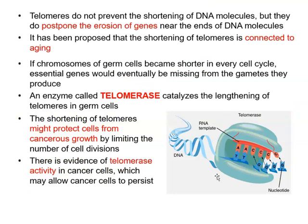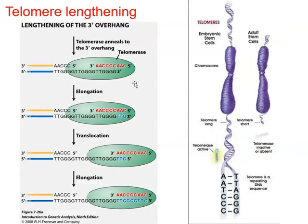Telomerase is the enzyme that can extend telomeres. Looking at this picture, telomerase comes equipped with an RNA template. The nucleotides are added based on that template, and that is how the extension takes place. Telomerase anneals to the single-stranded end of DNA and forms a temporary DNA-RNA hybrid. Then the extension follows the code, and the new nucleotides represent the extended telomeres.